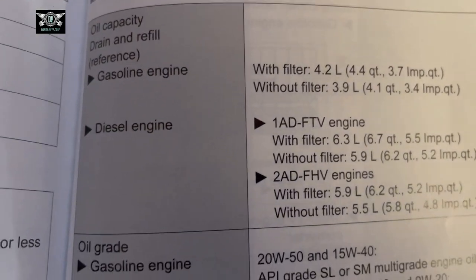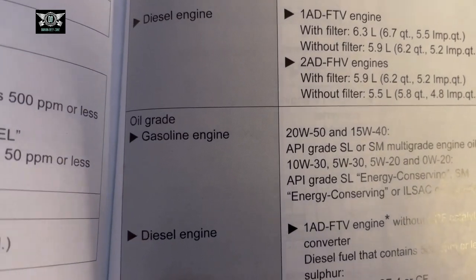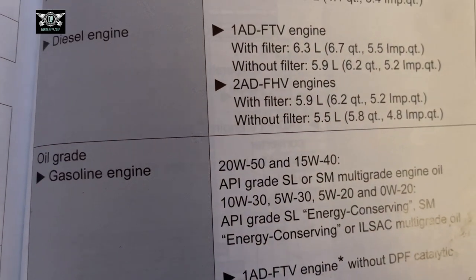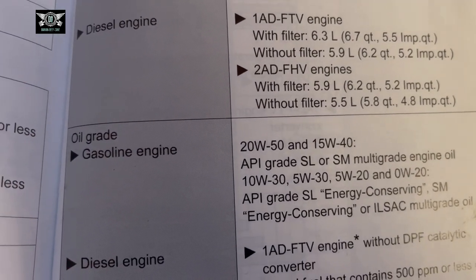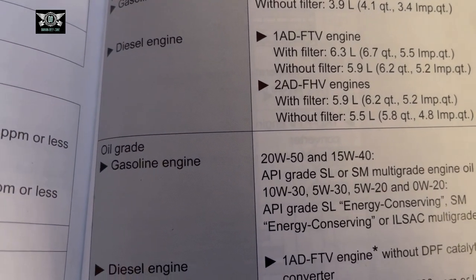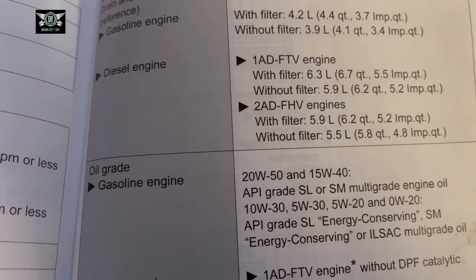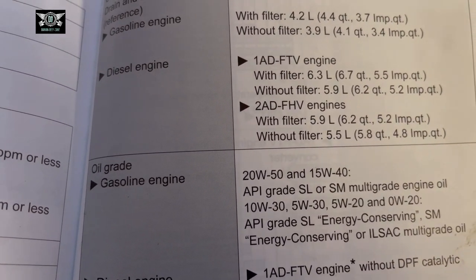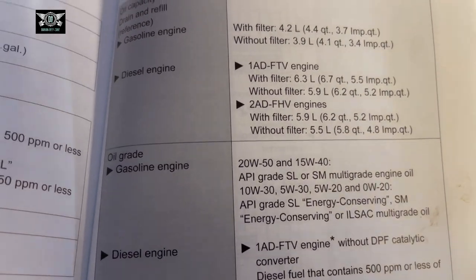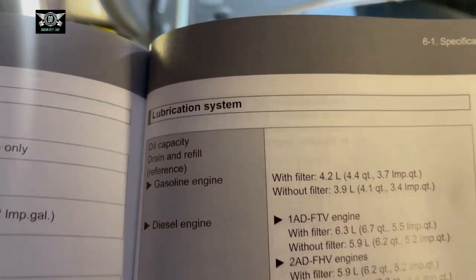The one below here is the diesel one, which I'm not focusing on. For the gasoline engine, the oil grade listed is 20W50 and 15W40, API grade SL or SM multi-grade engine oil. You can also use 10W30, 5W30, 5W20, and 0W20. I'm actually going to use 5W30 in today's oil change. So as we established, that's 4.2 liters.